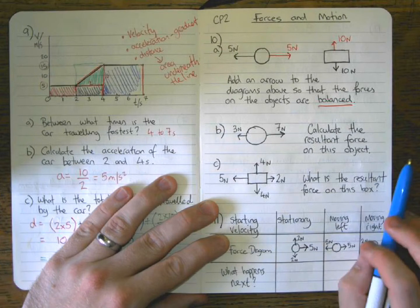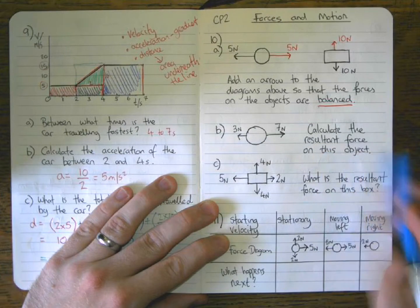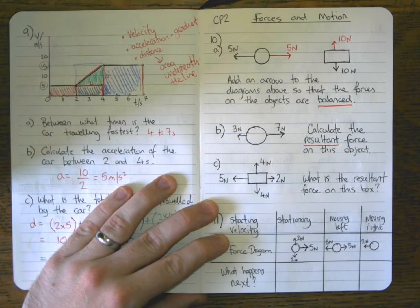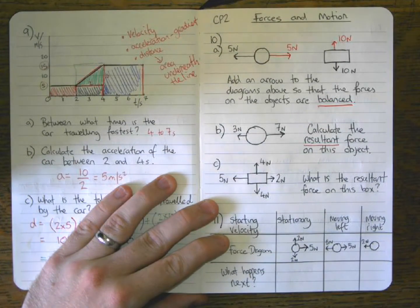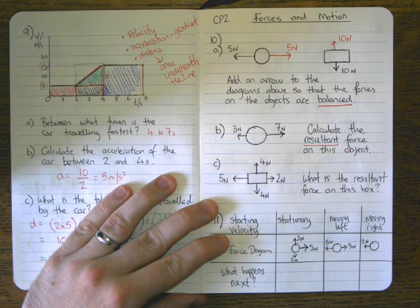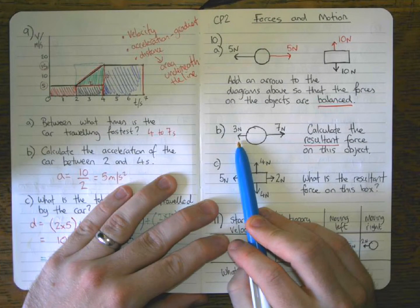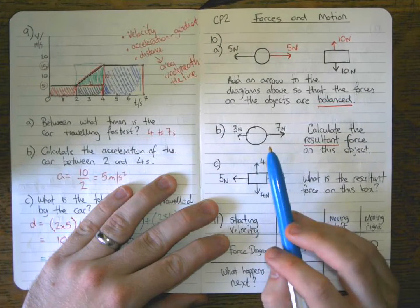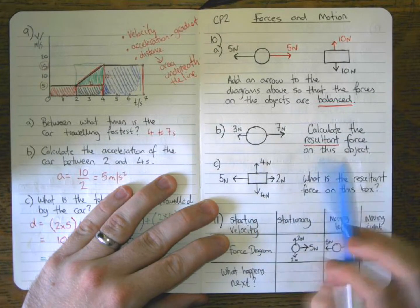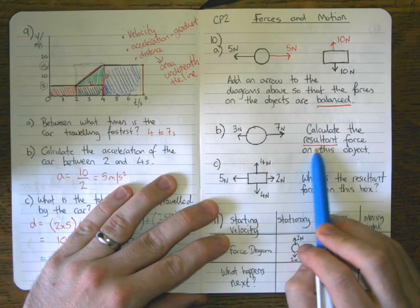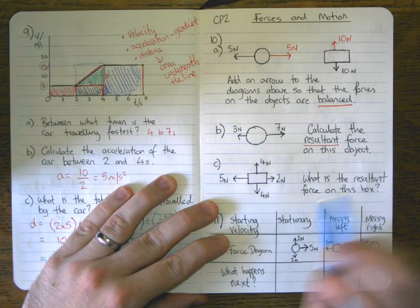The next question: calculate the resultant force. The word resultant means overall. We get a resultant force if there are one or more forces acting on an object, and simply put, if the forces aren't balanced, then there must be a resultant force. Here we've got seven Newtons to the right and three Newtons to the left. They're not balanced, because they're not going to cancel each other out. So we want to know the resultant force, which is the overall force.